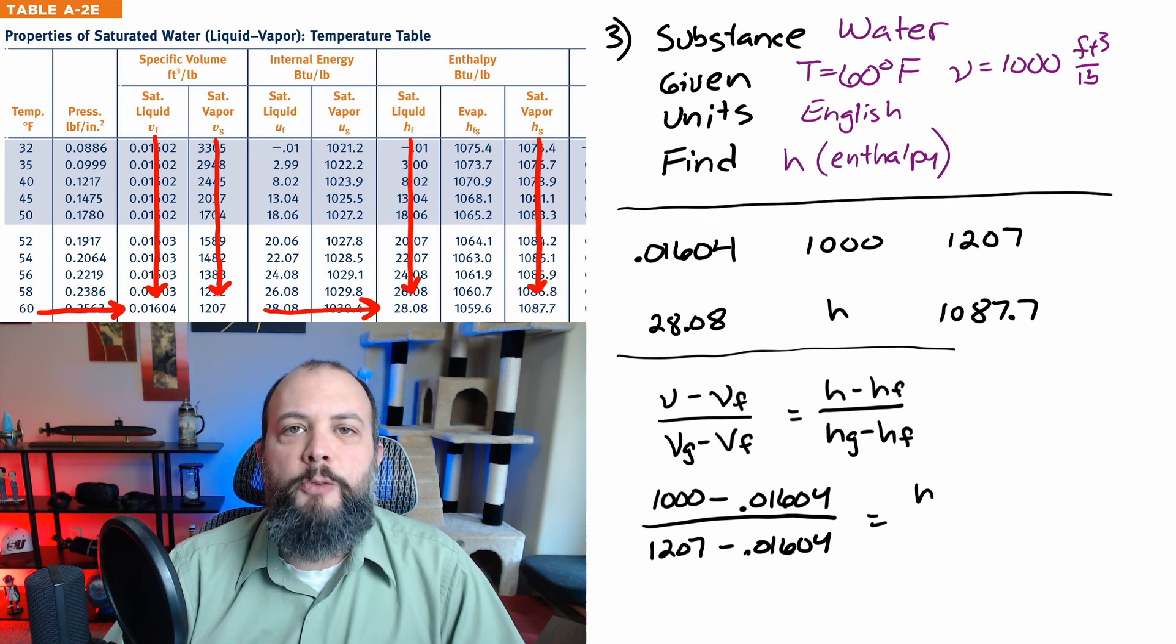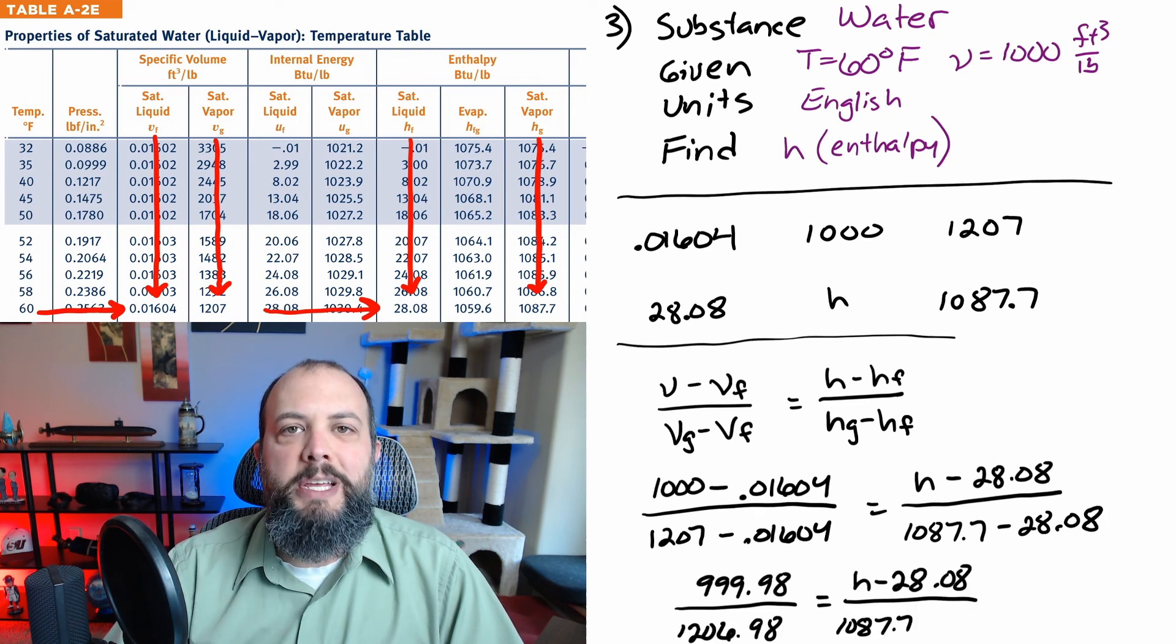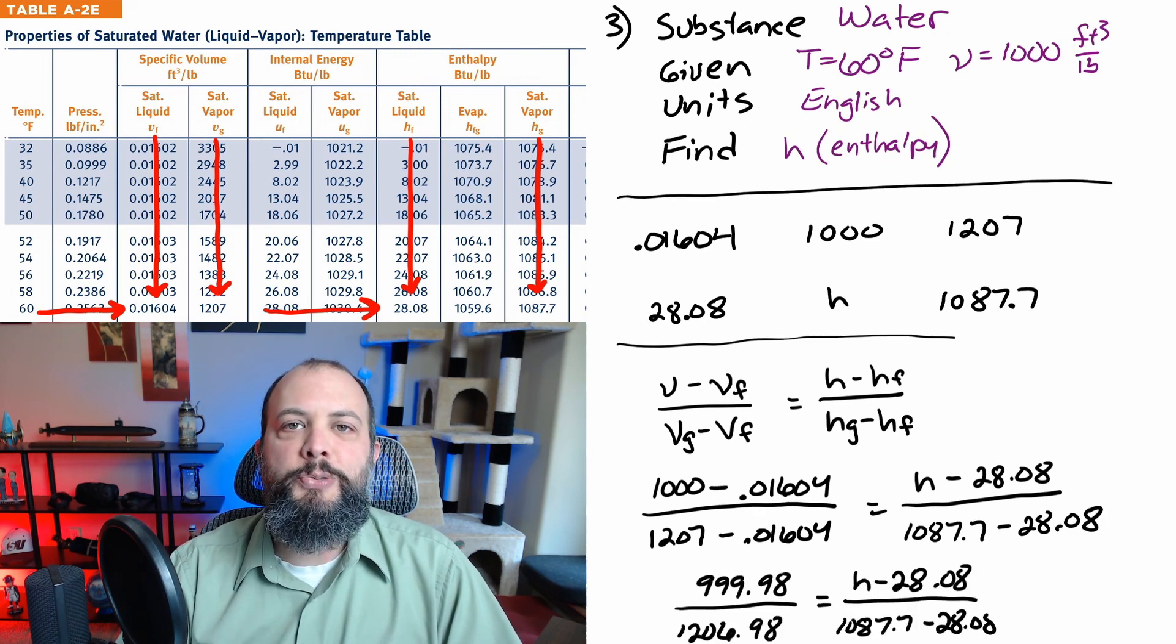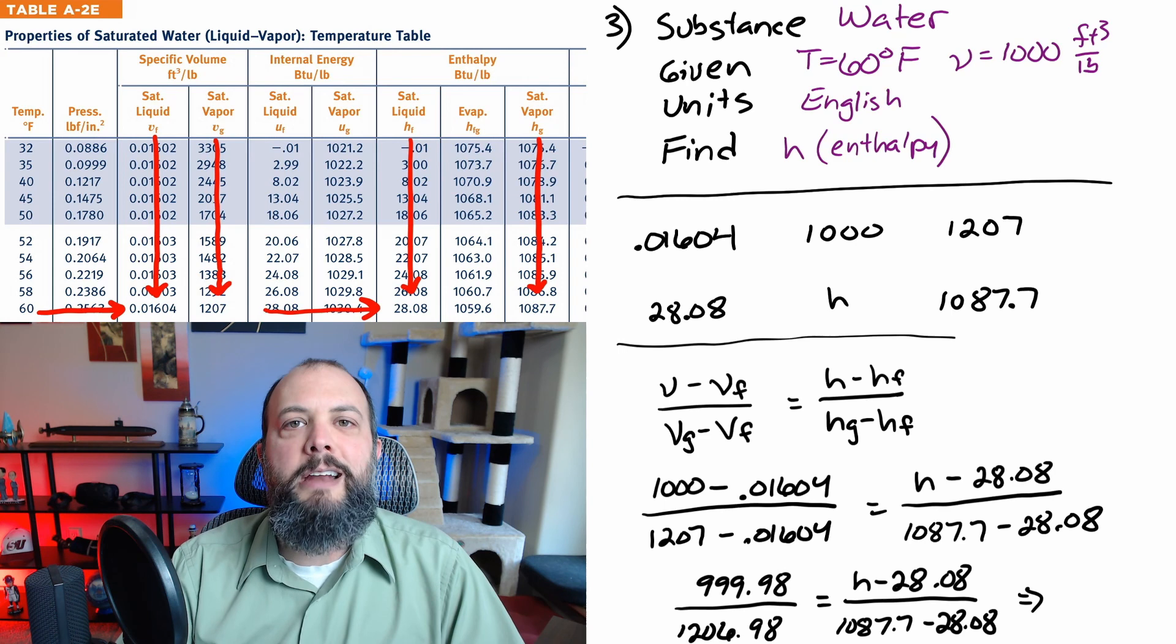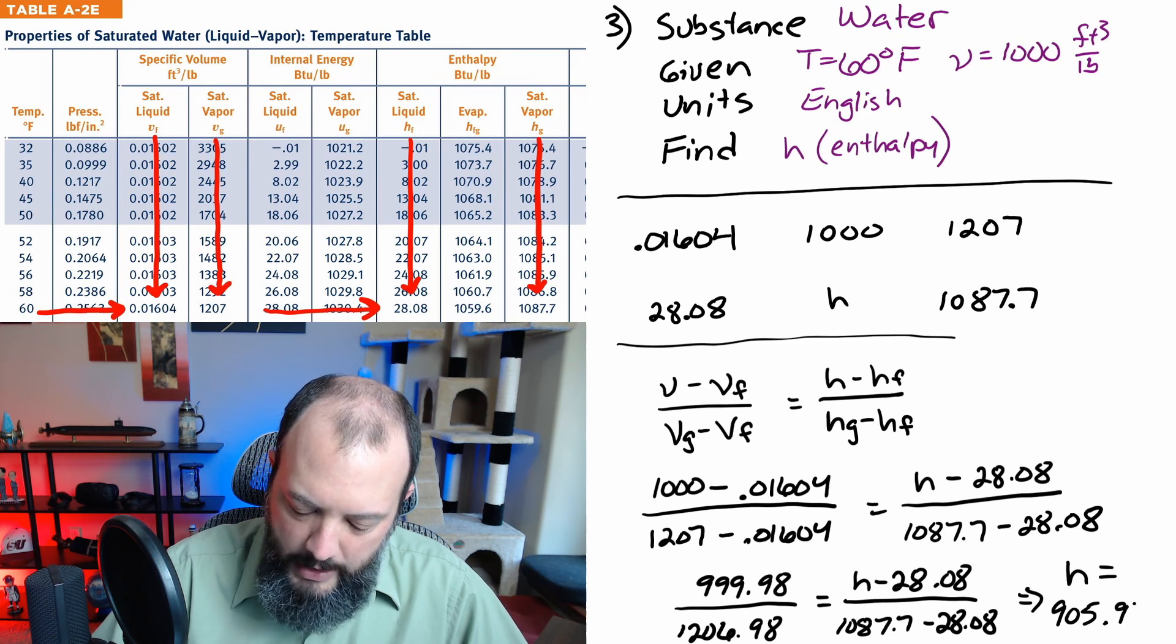So I'm going to start this problem by setting up my two ratios, one for specific volume and one for enthalpy. For both ratios the denominator is going to be the total gap between the saturated fluid and saturated vapor and both numerators will be the smaller gap that's just between the value I'm trying to find and the saturated fluid. So with some calculator work, you get an enthalpy value of 905.97 BTU per pound.